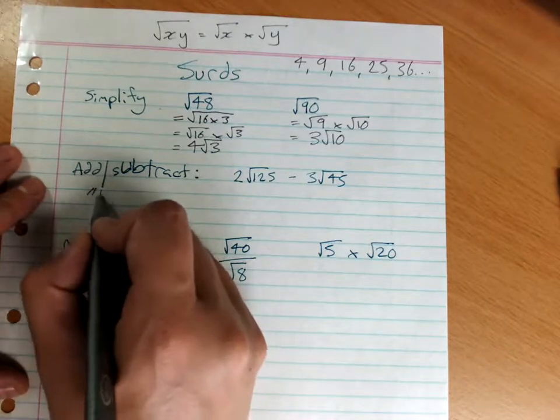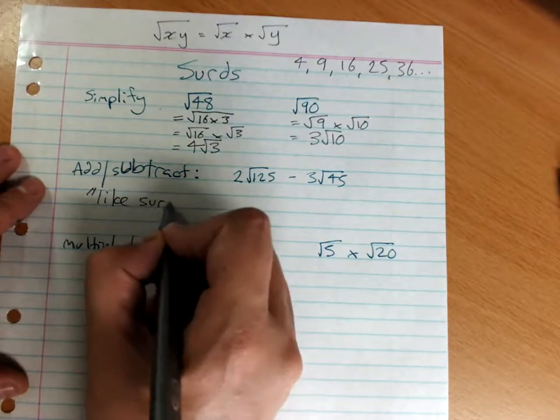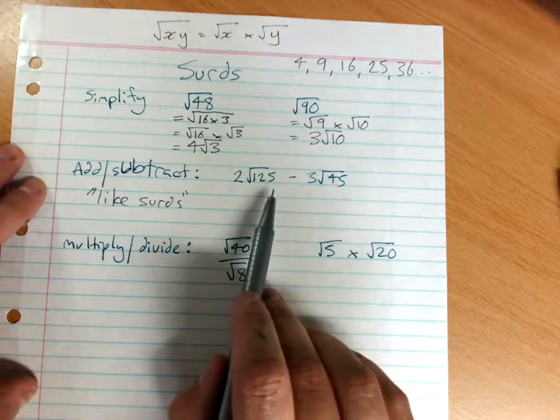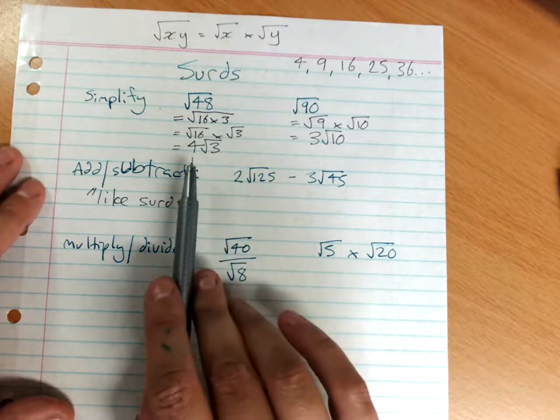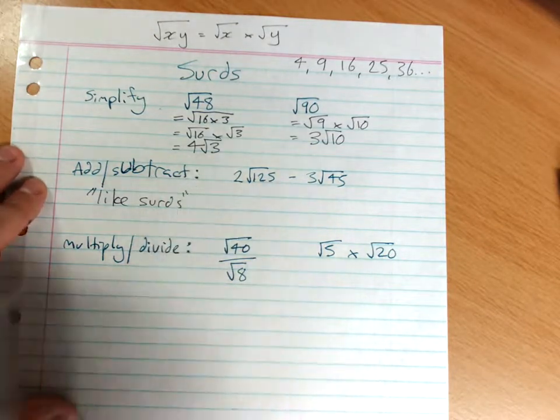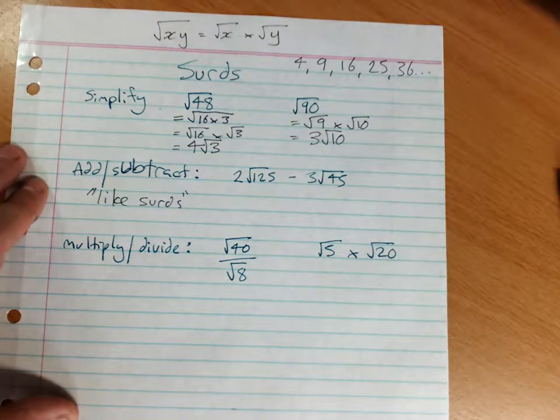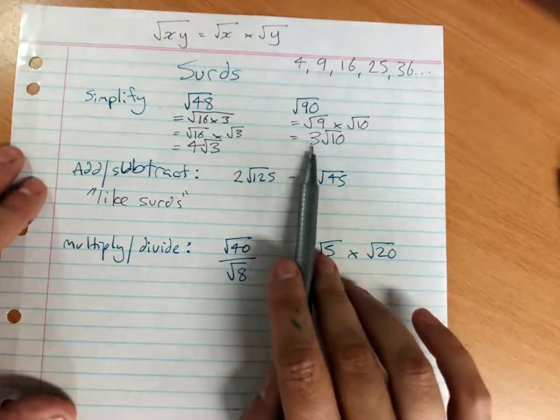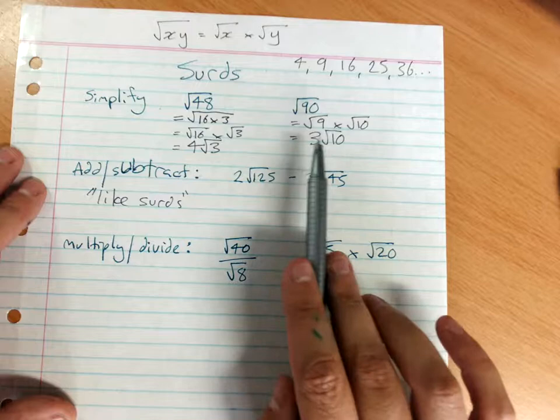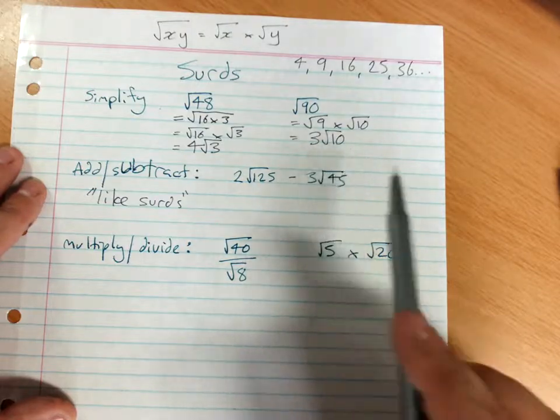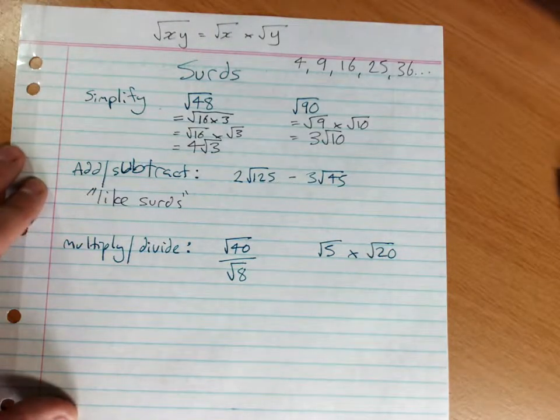To add and subtract, we need like surds. That is, it's got the same number under the radical. So 4 root 3 and 5 root 3 are like surds. And you can think of the number out the front as the coefficient, and the number under the radical is like your x or your y, so it works exactly like algebra would.